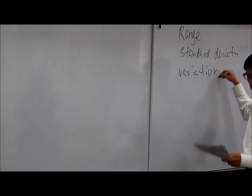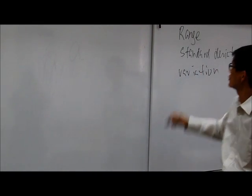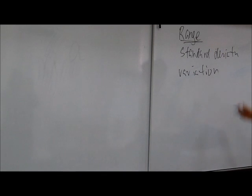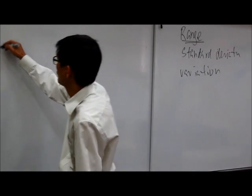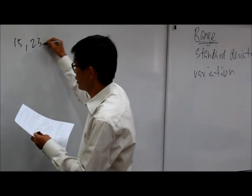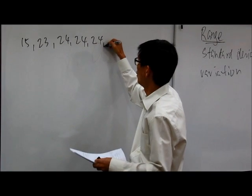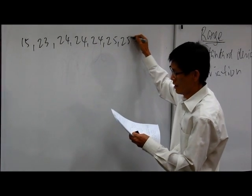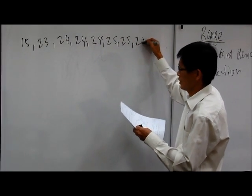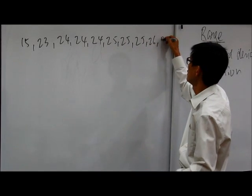And just a very quick recap, let's look at the range and some other ways of measuring dispersion. Suppose we have these times: 15, 23, 24, 24, 24, 35, 25, 25 again, and 26 and 98.